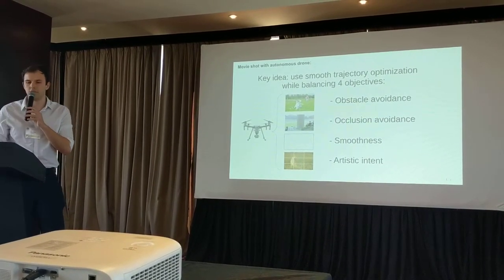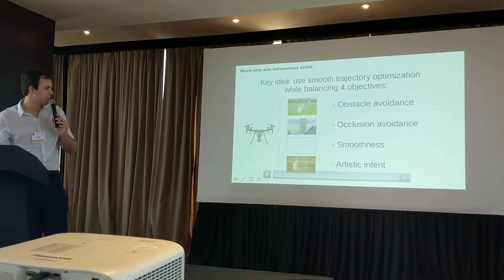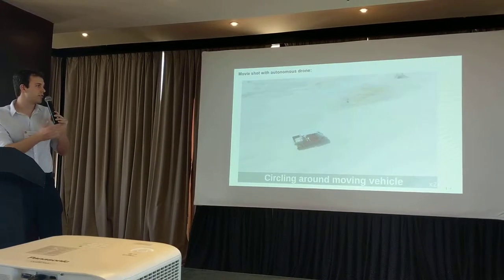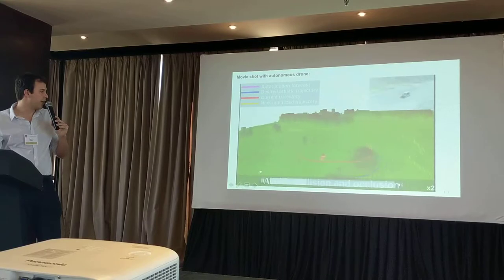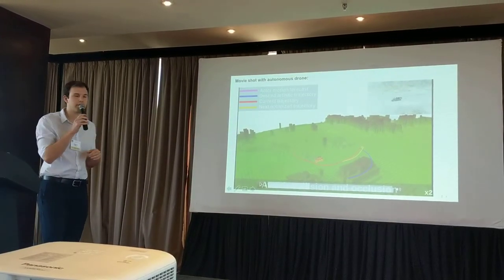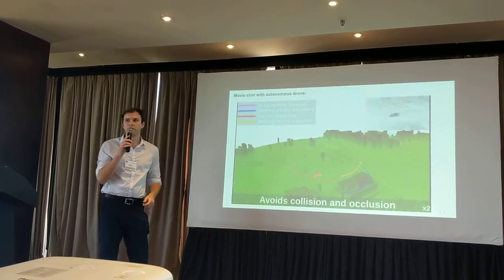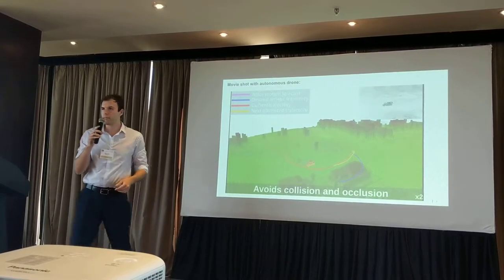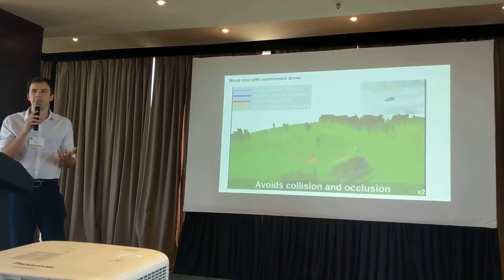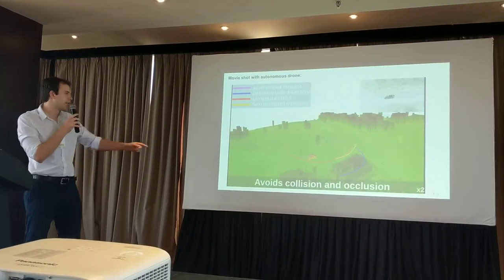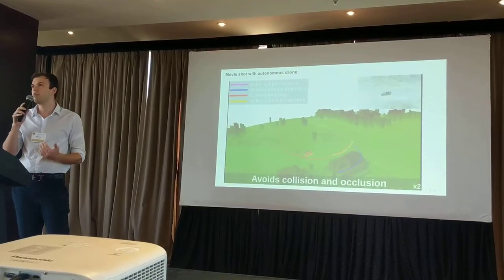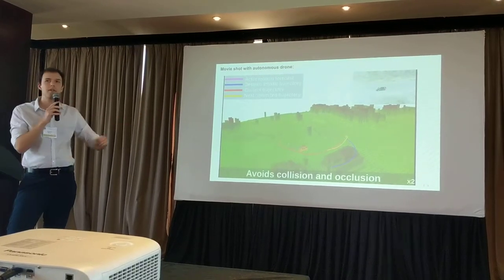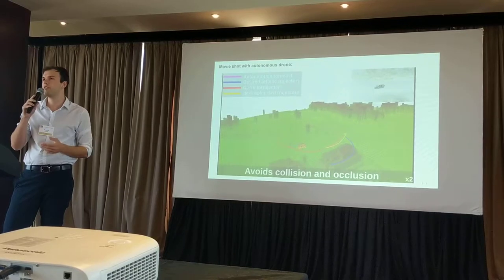Before talking about the method, I'll show a brief video of what our system does in practice. This is a completely autonomous shot taken with our system. It identifies the actor — in this case a car — and replans online. The drone identifies the car, and we use a filter to predict the car's future trajectory for the next 10 seconds, shown as the purple trajectory. Based on this actor forecast and artistic inputs from a director, we calculate the blue curve representing where we artistically would like to be if there were no obstacles. We then optimize in real time for the red trajectory that accounts for obstacles for both safety and occlusion avoidance.